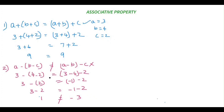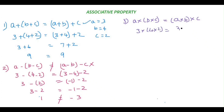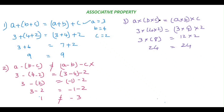Now let's see whether associative property holds good for multiplication. The property for multiplication is: a times (b times c) equals (a times b) times c. Using the same values — a is 3, b is 4, c is 2 — we get 3 times (4 times 2) equals (3 times 4) times 2. On the left, 4 times 2 is 8, so 3 times 8 is 24. On the right, 3 times 4 is 12, and 12 times 2 is also 24. So associative property holds good for multiplication.